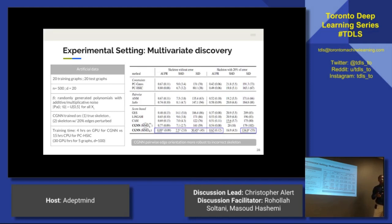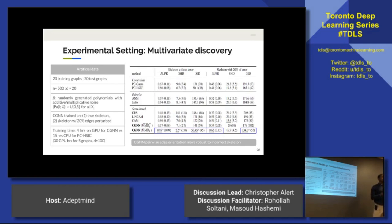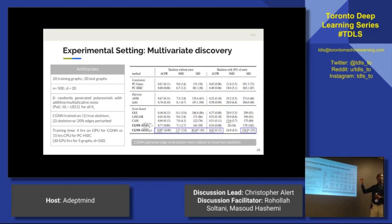Precision is: how often was I correct at orienting an edge given that I said there was an edge? Recall is: how many of the edges did I actually get? One axis is precision, the other is recall, and the hypothesis is that they set different thresholds on the confidence score to generate points along the curve. The area under that curve is a measure of how well it performed at different levels of confidence.